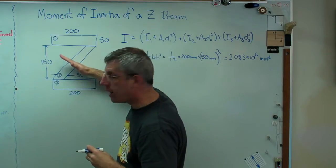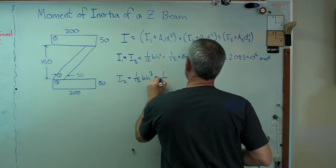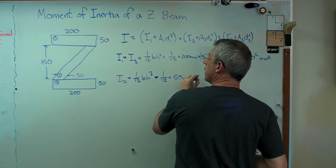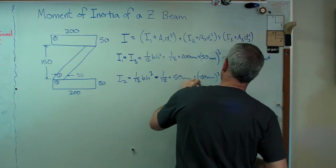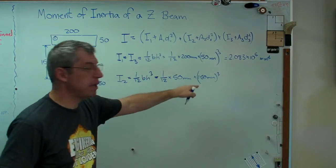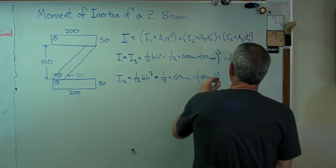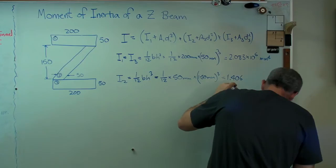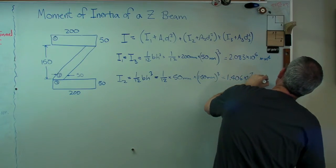So it turns out that I2 is also 1/12 bh cubed as long as you measure b horizontally. Now, if you try to measure b that way, all bets are off. You're going to get the wrong answer. But this isn't too hard. So it's 1 over 12 times 50 mm times 150 mm cubed. And that's going to be a pretty big number. And it turns out to be 1.406 times 10 to the 7th millimeters to the 4th.